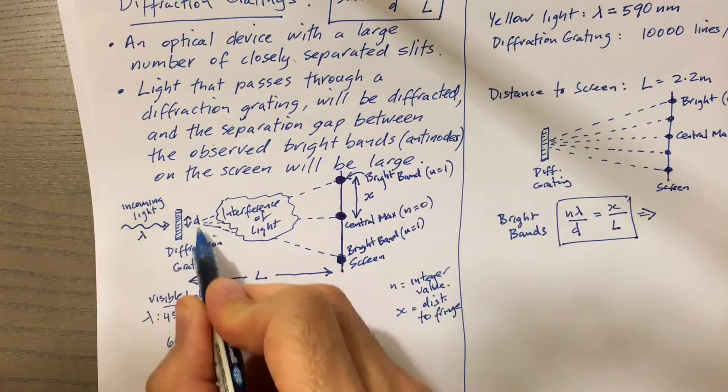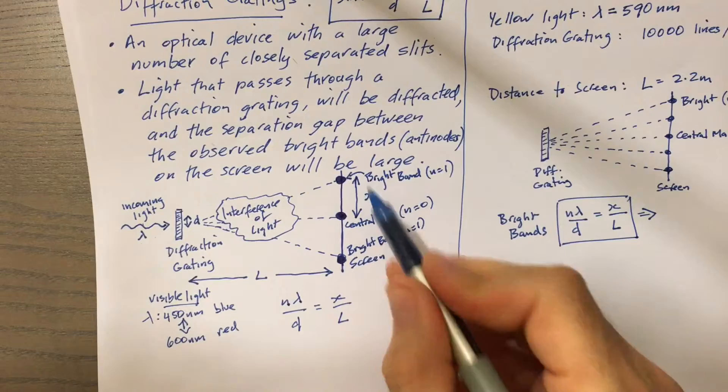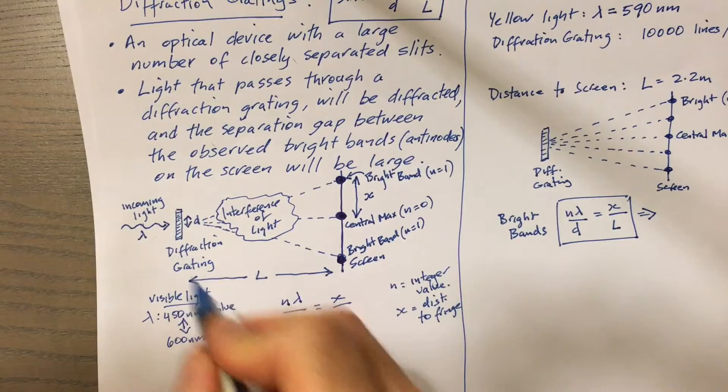So the wavelength is the length of the wave of the light coming in. n is the number of the bright band that we're looking at. x is the separation between the central max and the bright band. What is d? d is the separation between the slits. If we have multiple slits, we're just looking at the distance from one slit to the adjacent slit.